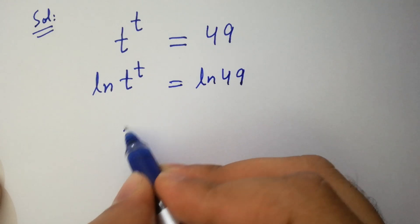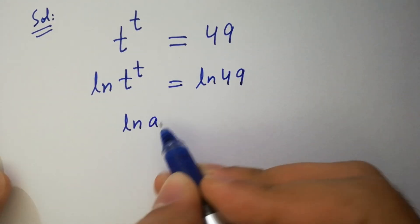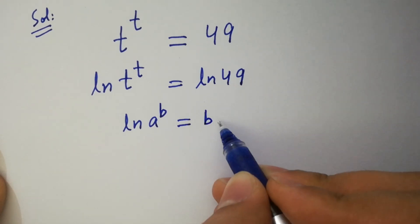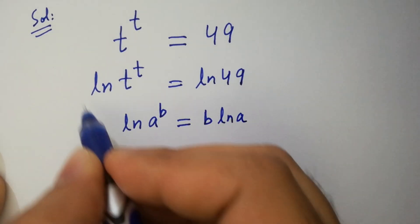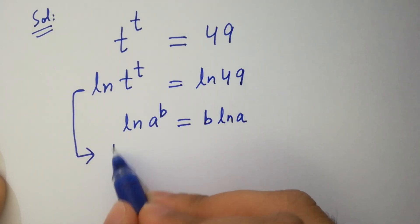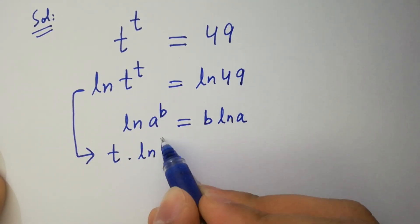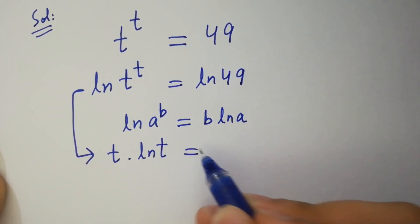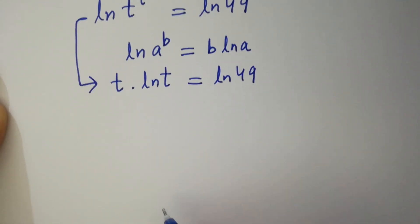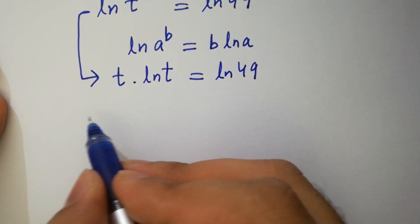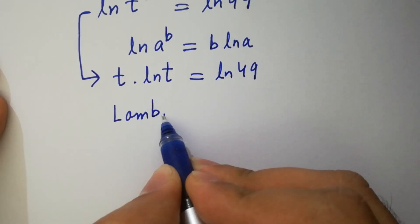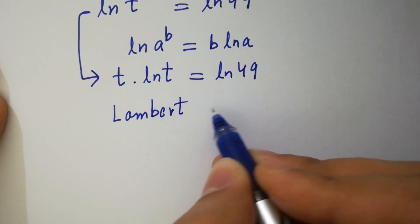Since ln a to the power b equals b ln a, then it will be t ln t equals ln 49 as it is. Let's apply here Lambert W function.